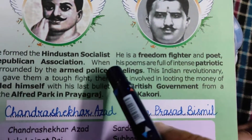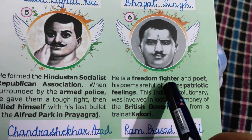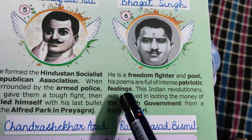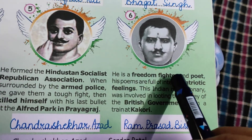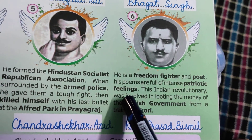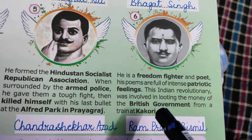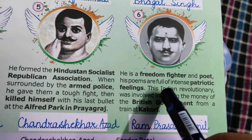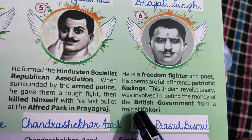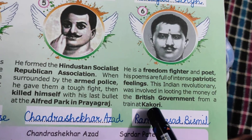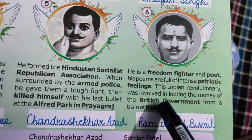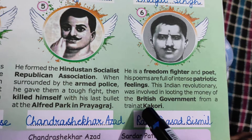The last one for today is a freedom fighter and poet. His poems are full of intense patriotic feelings. He was not only a freedom fighter but also a poet, and whatever poems he wrote were all filled with patriotic feeling. They aroused the feeling of patriotism in people so that they would fight for their country. This Indian revolutionary was involved in looting money of the British government from a train at Kakori. That train, which had a lot of money belonging to the British government, was looted at Kakori.